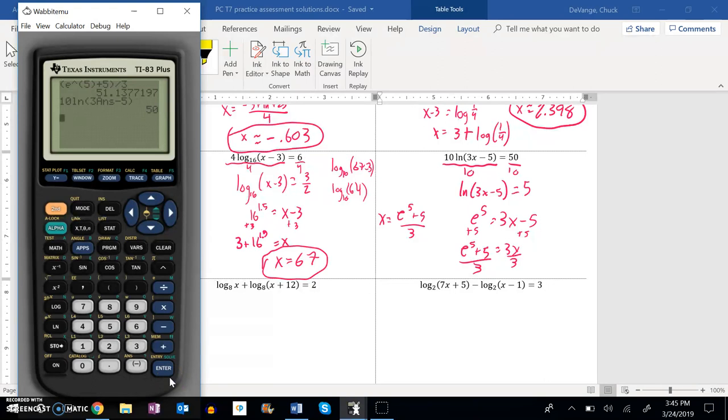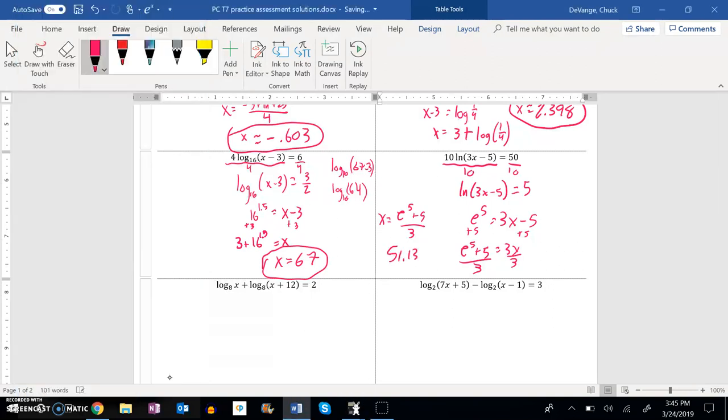So I'm rounding to three decimal places. So 51.138, about, since I rounded.